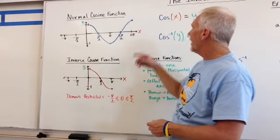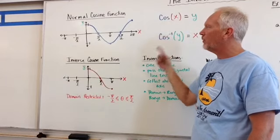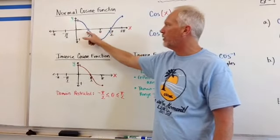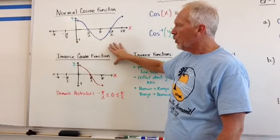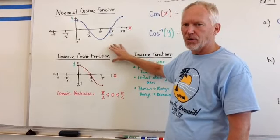We're used to seeing that as cosine x equals y. So if we put in some x value, we will get some y value out. However, when we do the inverse cosine function...